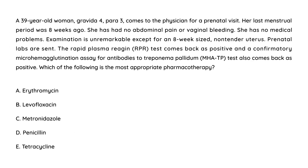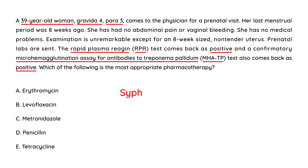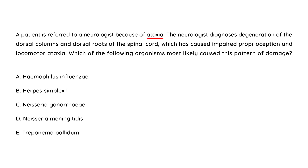Clinical vignette 1: A 39-year-old woman, gravida 4 para 3, comes for a prenatal visit at eight weeks gestation. The exam is unremarkable except for an eight-week-size non-tender uterus. Prenatal labs show a positive rapid plasma reagent test and a confirmatory MHA-TP also positive. This woman has syphilis, and the treatment of choice is an IM shot of penicillin G — choice D.